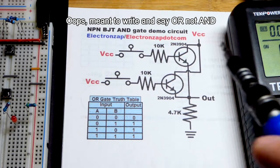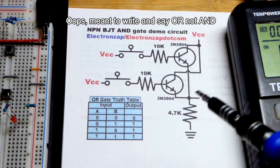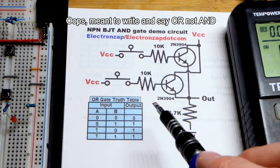So now in this video, we're going to look at another AND gate. This time, we're going to use NPN bipolar junction transistors.